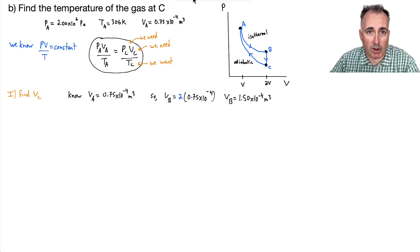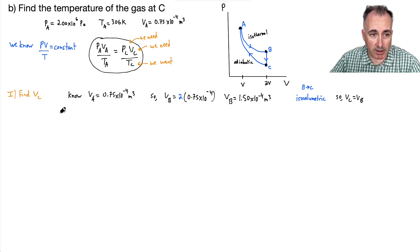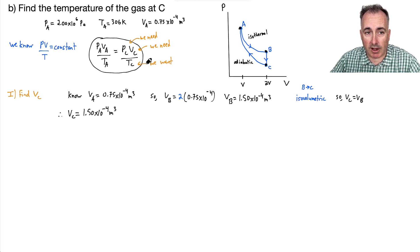So 0.75 times 10 to the minus 4. And what does that give me, by the way? That gives me that VB is going to be just 1.5 times 10 to the minus 4 meters cubed. And why is that important? Well, because it's isovolumetric. Remember, because of this one right here, because the volume is the same, that means the volume at B tells me the volume at C. Okay, so I can say that V at C equals V at B. And why is that important? Because now I know my conclusion, then. That means V at C must be, then, the same as B, which is 1.50 times 10 to the minus 4 meters cubed.